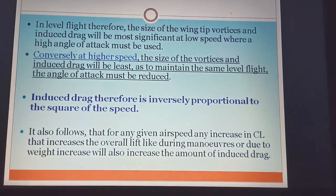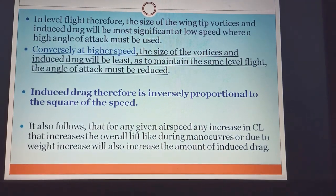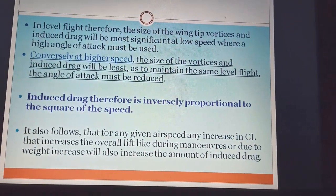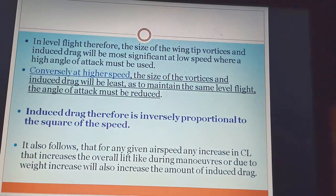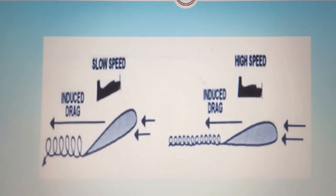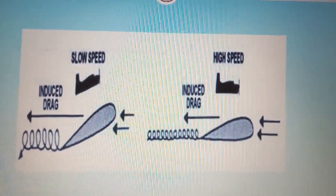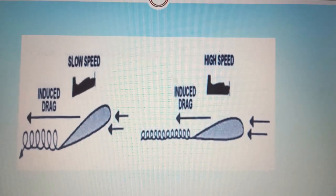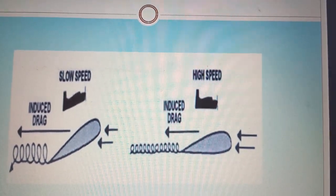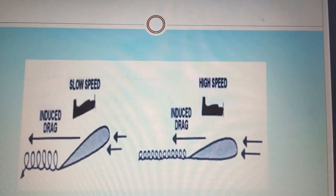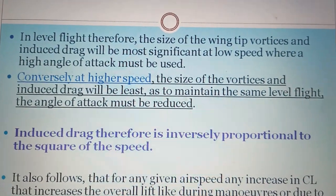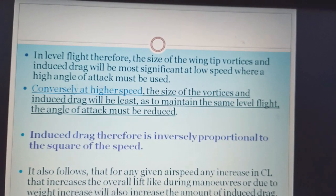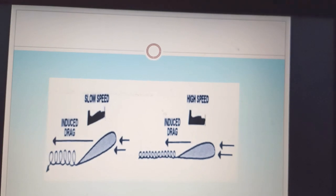For any given airspeed, any increase in CL — such as during a maneuver or due to weight increase — will also increase the amount of induced drag. Induced drag is directly proportional to weight. The diagram shows: at slow speed with high angle of attack, vortex strength is very high; at high speed with lower angle of attack, induced drag and vortex strength are much lower.